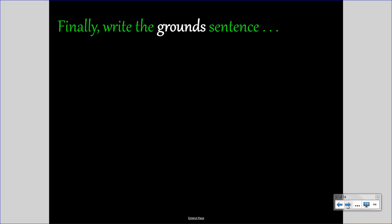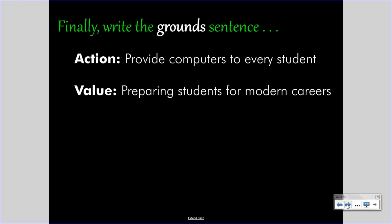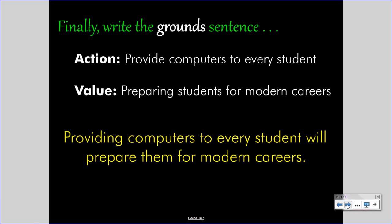Let's go to the last step, which is to write the grounds sentence. The grounds sentence proposes your evidence, and writing it is simple — you already have both parts, because this sentence pairs the action with the value. This statement explains that the action will achieve the value. It goes like this: Providing computers to every student will prepare them for modern careers. The action begins the sentence and the value ends it. Notice that the word 'should' does not appear this time, and this is correct. That word will appear in the claim and warrant, but not the grounds.